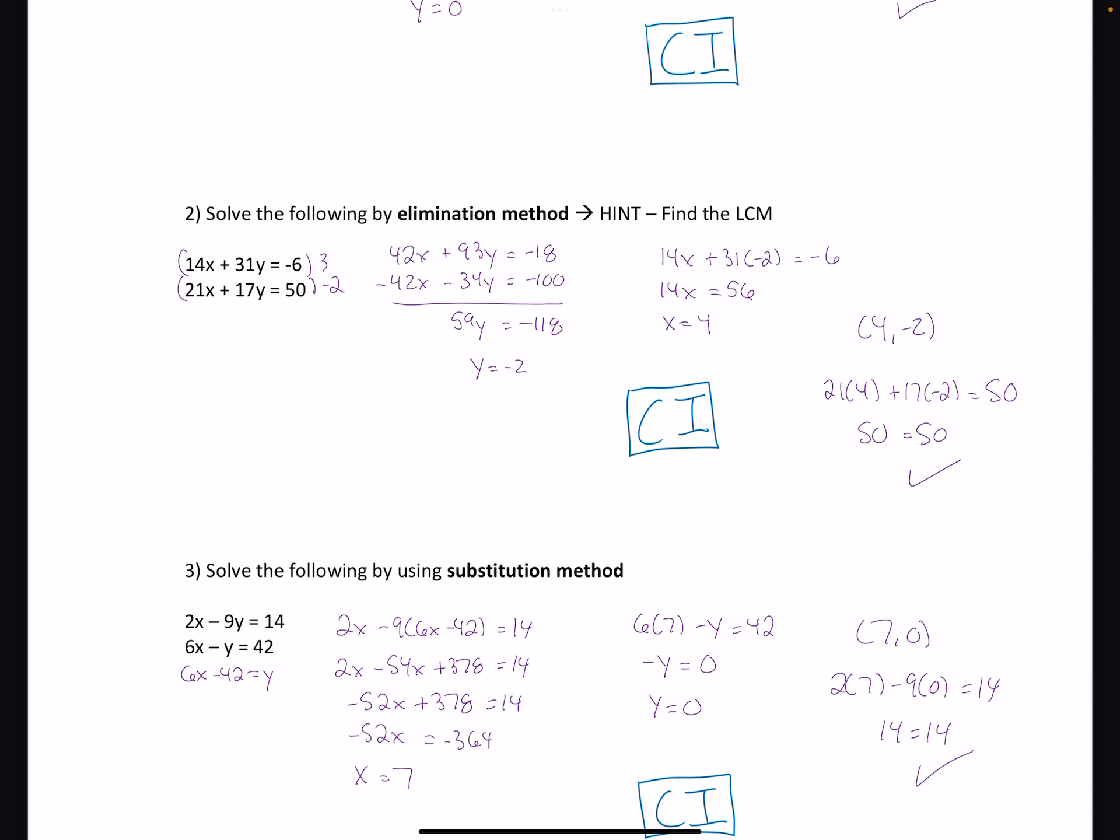Now a common mistake, talking about example 2 here, a common mistake here is that people look at this right away and they're like, oh, I'm going to multiply the top by 21, the bottom by negative 14. No. One thing we've talked about in class is keeping our answers small. Keeping our answers small is important. By multiplying by those two numbers, we'd have huge numbers to work with.